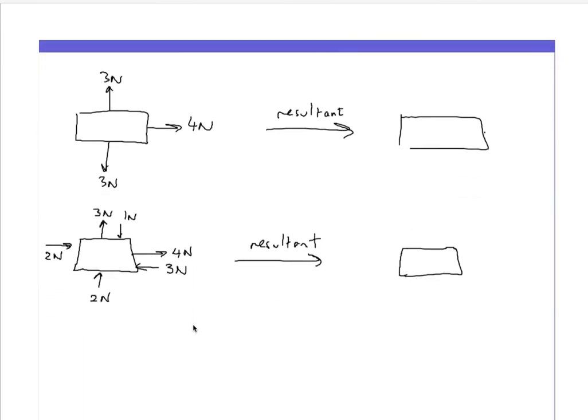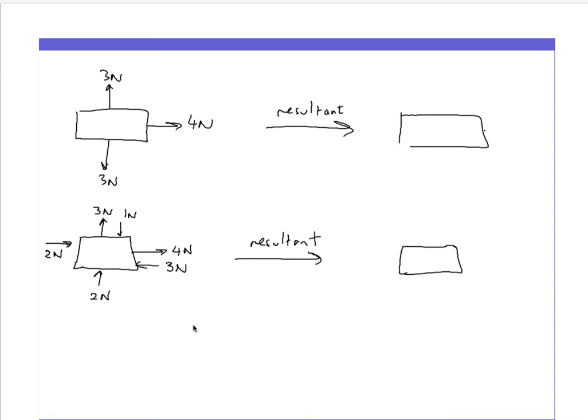Well here's some more examples first before we take a look. I've got three newtons upwards, three newtons downwards, and four newtons to the right. And this one here - three newtons up, one newton down on that side, two newtons up on that side, two newtons going to the right on that side, four newtons on that side, three newtons on that side.